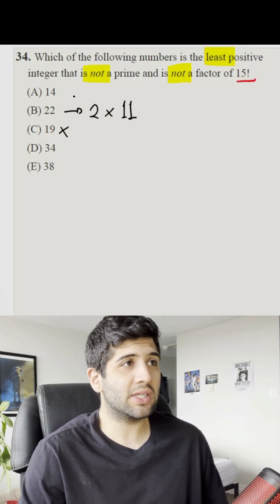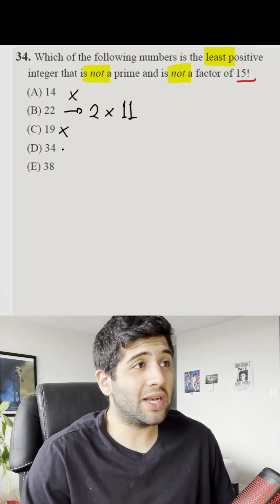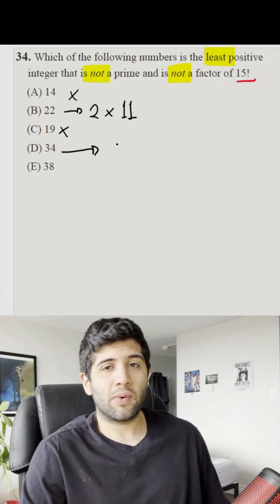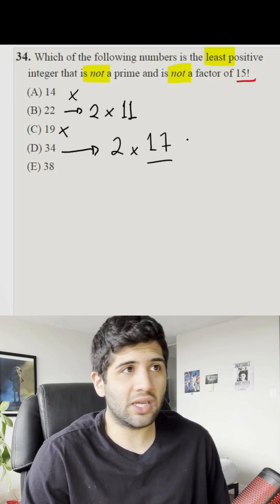So in this case we can eliminate 14 as well. We can go through and check letter D. In this case we can write this number as 2 times 17, and as you can see, 17 is not under this number.